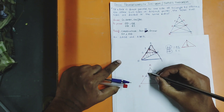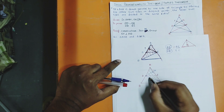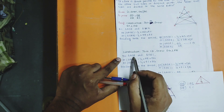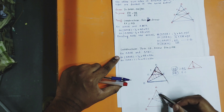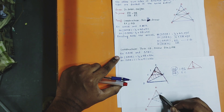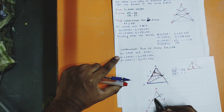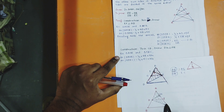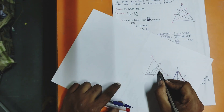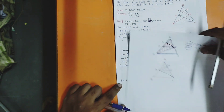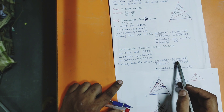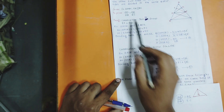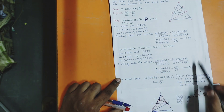Now, what are the two triangles here? For triangle ADE: area = half into AE into DG, where DG is the height. For the bottom triangle DCE: area = half into EC into DG. DG cancels, half cancels. This gives AE by EC — this is equation number two: area(ADE) / area(DCE) = AE / EC.